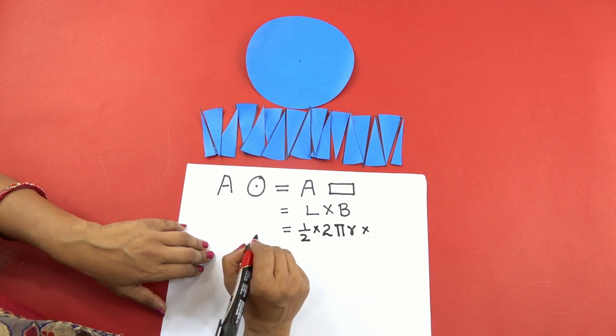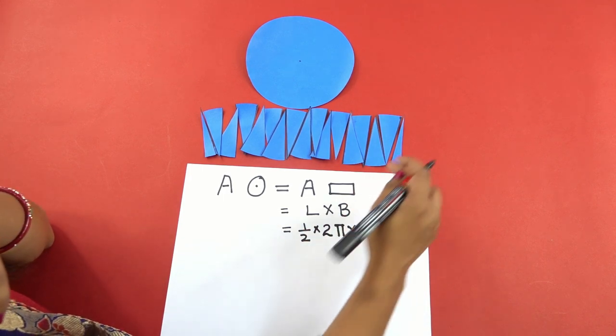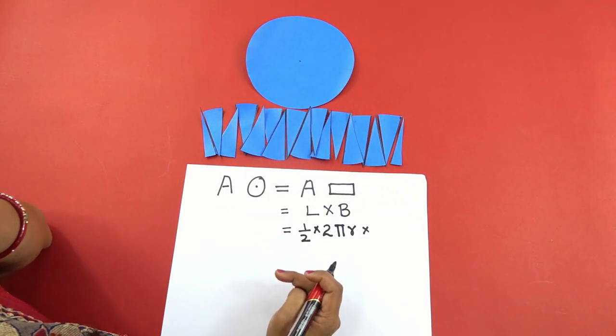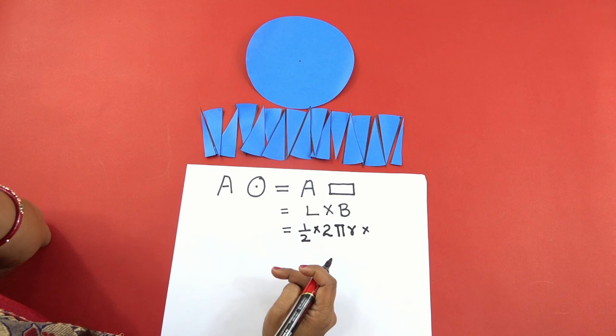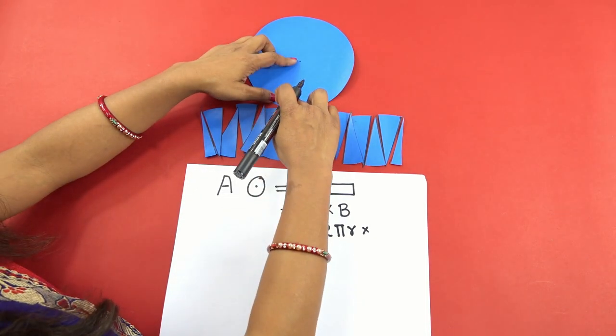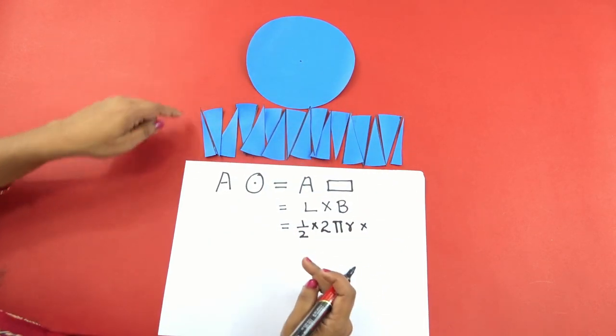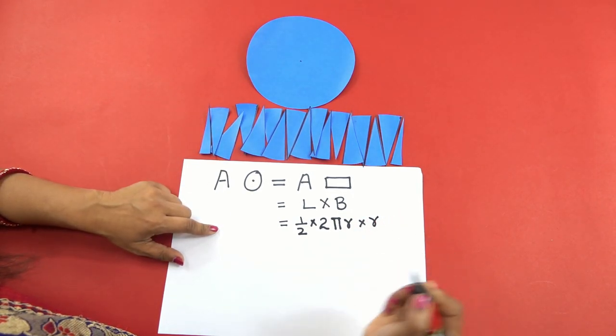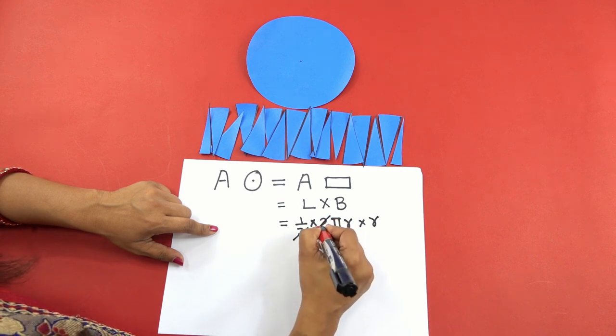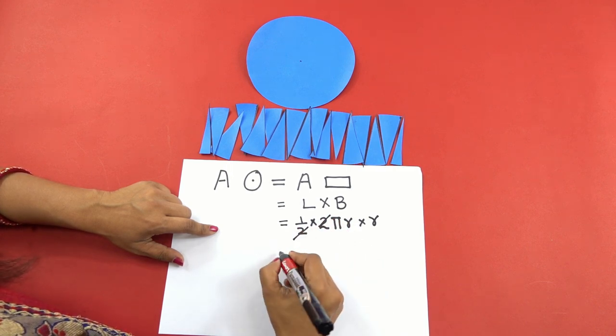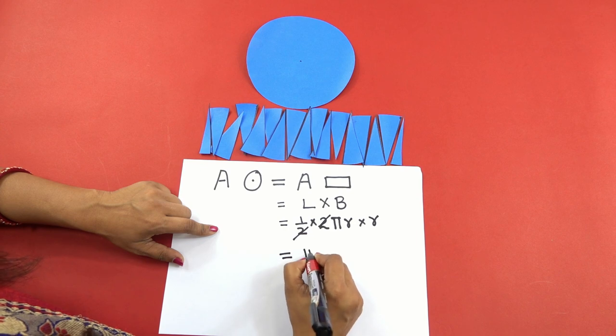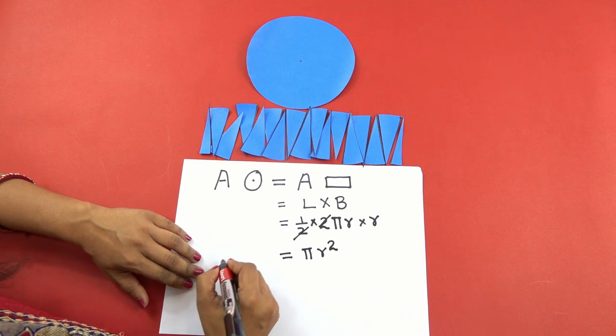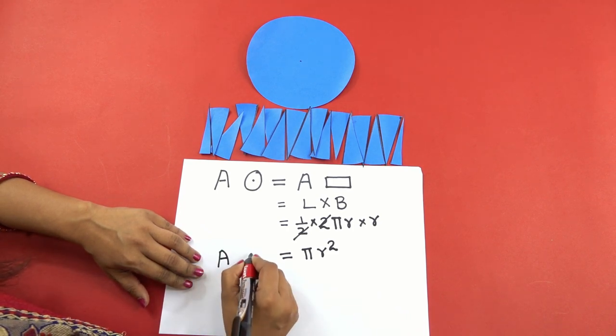Now breadth. What is the breadth of this rectangle made up of in respect to the circle? It is nothing but it is the radius, yes. So the breadth is radius. So if we calculate this further, this two will cancel out and we will get πr².